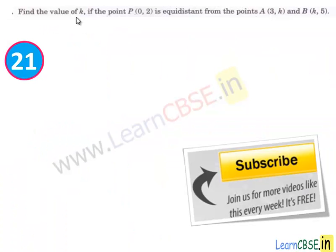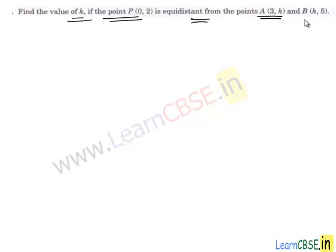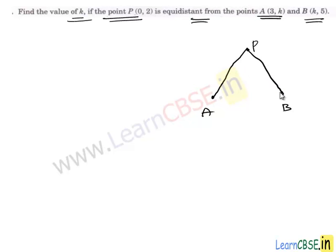In this question, we have to find the value of k where point P is equidistant from points A and B. That means the distance of point P from A is the same as the distance of point P from B. So using this condition, we can get the value of k.